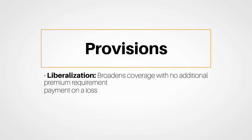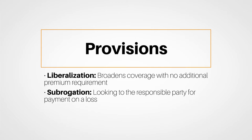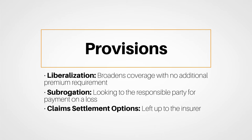We'll also look at subrogation, which basically means looking to the responsible party for payment on a loss. The segment continues by detailing claim settlement options, which actually are mostly left up to the insurer. In the event of a covered loss, it's the carrier's option to repair, replace, or cash out the insured for a loss — it's not the insured's option.